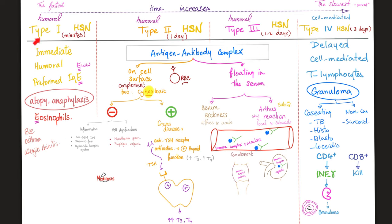Here is a quick overview of the four types of hypersensitivity. Type 1: immediate — within minutes, humoral immunity, antibodies such as IgE, preformed antibodies. Remember, IgE is associated with allergy, anaphylaxis, atopy, asthma, and eosinophilia.